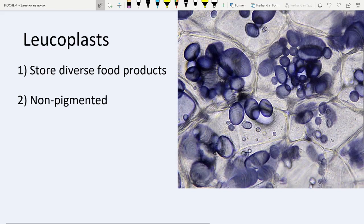In contrast to other types of plastids, so it is their feature. And they are located in roots and seeds and store stuff there.